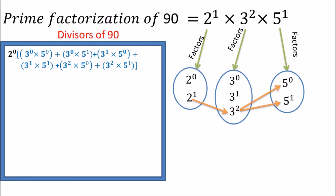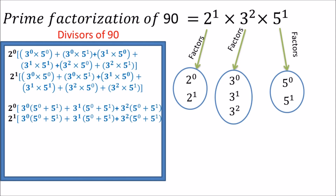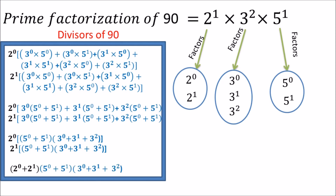Taking 2 raised to 1 common from the next six divisors, the sum of all these terms gives us the sum of divisors of 90. We then take 3 raised to 0 common from the first two terms, 3 raised to 1 from the next two, and 3 squared from the last two terms, applying this in both brackets. In all these terms, 5 raised to 0 plus 5 raised to 1 is common, leaving us with (2 raised to 0 plus 2 raised to 1) times (5 raised to 0 plus 5 raised to 1) times (3 raised to 0 plus 3 raised to 1 plus 3 squared).